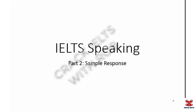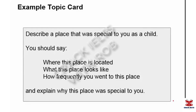At the end of the speech, where I discuss the last sub-point with a longer response, I'll put up my notes on screen so you can follow along. So let's look at the topic card as a reminder. In this topic we are supposed to describe a place that was special as a child — say where the place is located, what it looks like, and how frequently we went. Those will be at the beginning of the speech. Then for the longer response, we explain why this place is special, and that's where I'll switch to my notes.